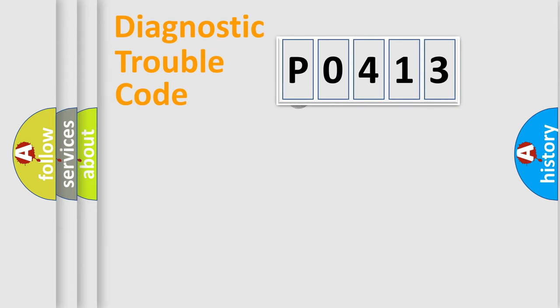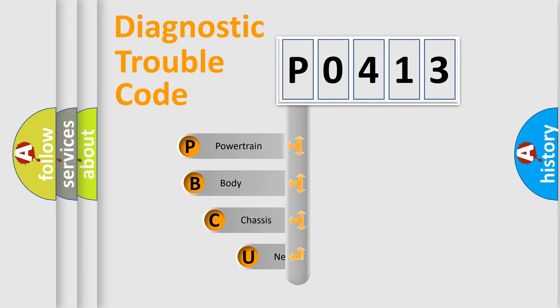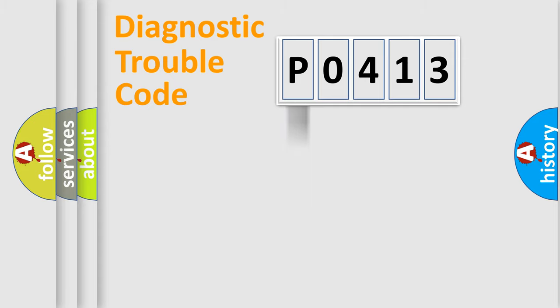First, let's look at the history of diagnostic fault code composition according to the OBD2 protocol, which is unified for all automakers since 2000. We divide the electric system of the automobile into four basic units: Powertrain, Body, Chassis, and Network. This distribution is defined in the first character of the code.